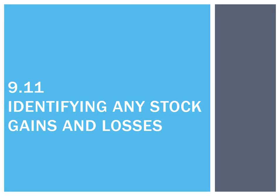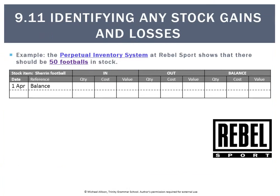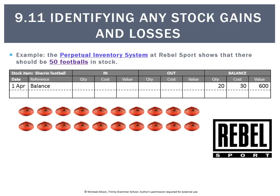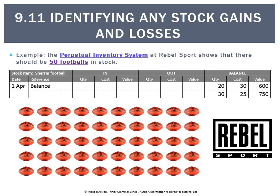The Perpetual Inventory System — one of its key advantages is that we can identify stock gains and losses. For example, let's say Rebel Sport had the following stock card for Sherrin footballs. It says there should be 20 at $30 for a total of $600, and 30 units at $25 each for a total of $750 — basically 50 units. That is what would be showing on their actual stock computer.